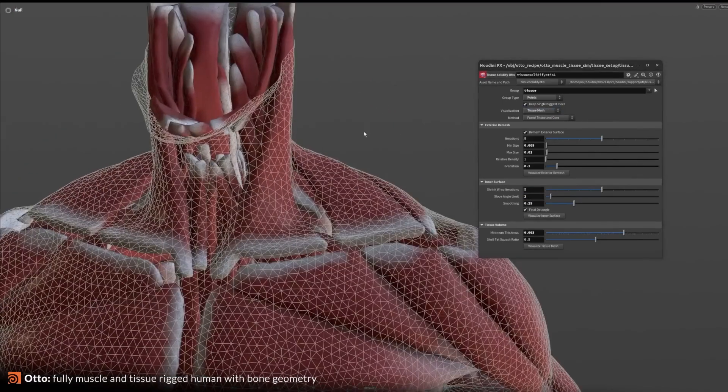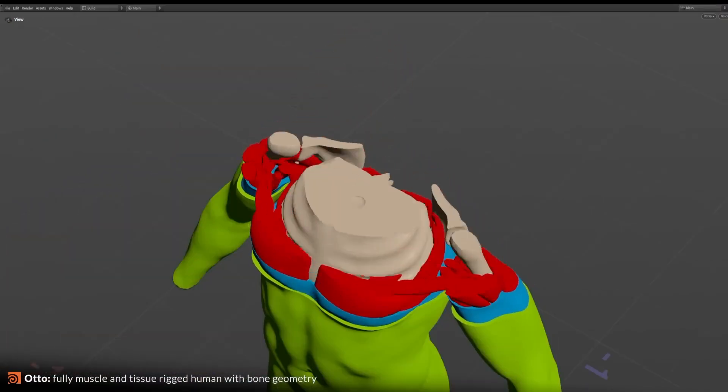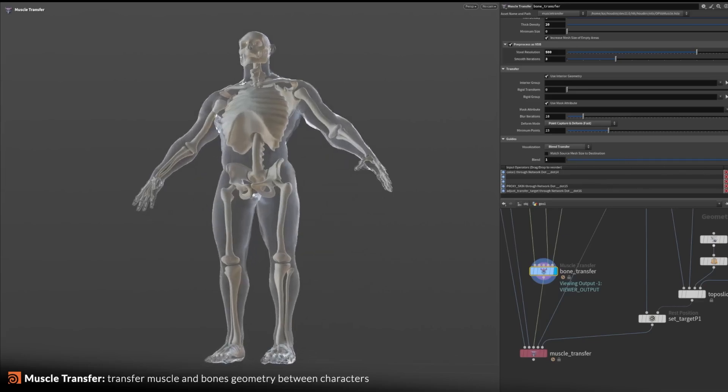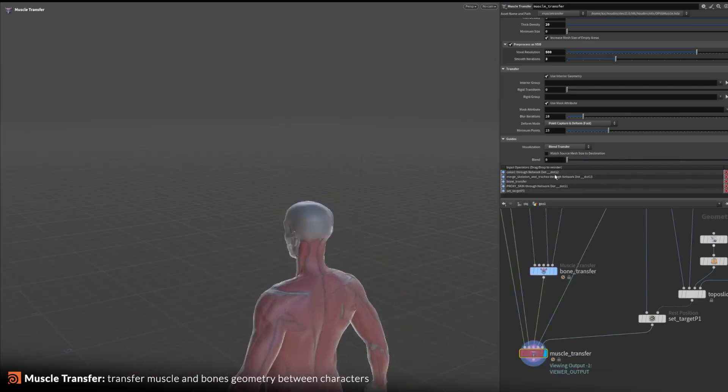In simulation and effects, Houdini 21 introduces Otis, a GPU-accelerated organic tissue solver that brings near-FEM quality to muscle, skin, and fat simulations.